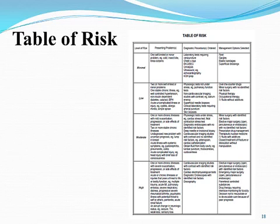High risk also includes acute or chronic illnesses or injuries that pose a life threat to bodily function, such as an MI or PE, and an abrupt change in neurological status such as a seizure, TIA, weakness, or sensory loss. It needs to be very clearly documented.